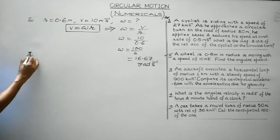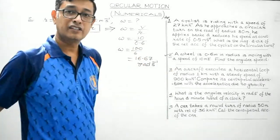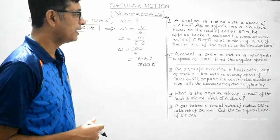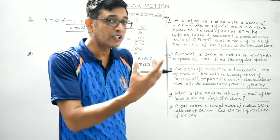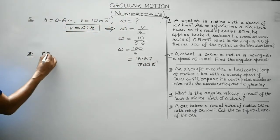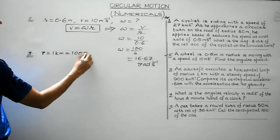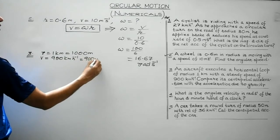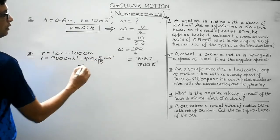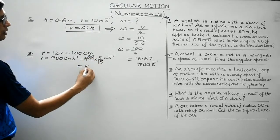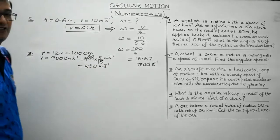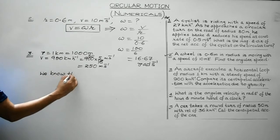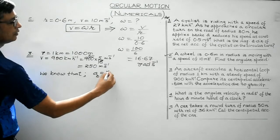Question 3: an aircraft executes a horizontal loop of radius 1 km with a steady speed of 900 km per hour. We are supposed to compare its centripetal acceleration with the acceleration due to gravity. Radius = 1 km = 1000 metres. Speed = 900 km/hr = 900 × 5/18 = 250 metres per second. Centripetal acceleration = v²/r.